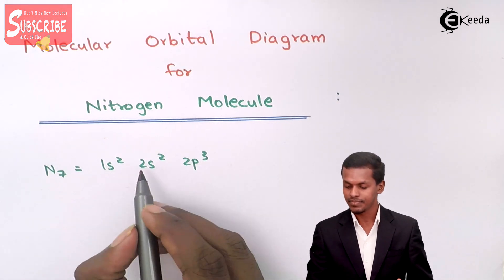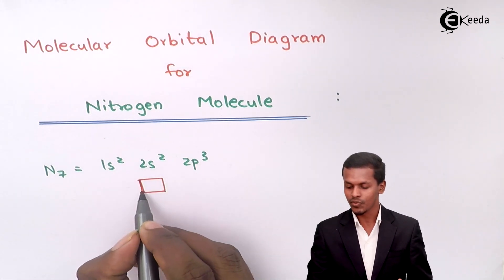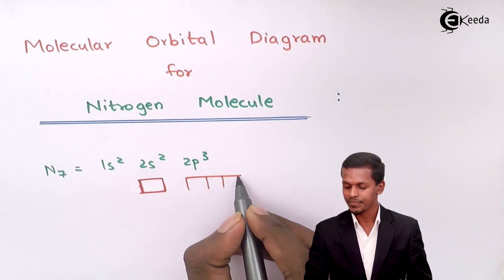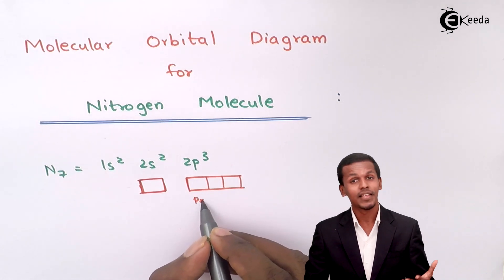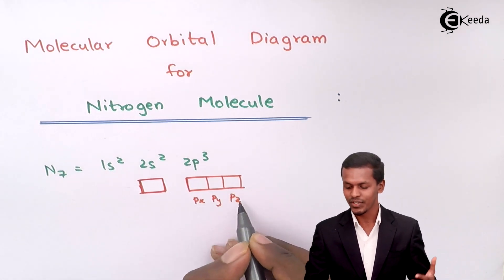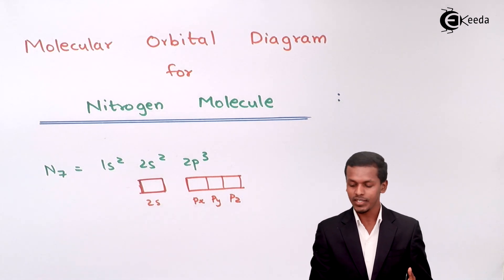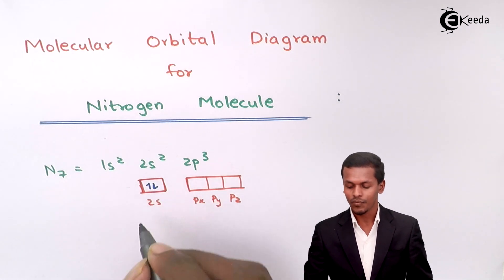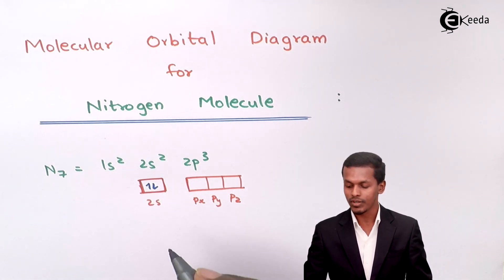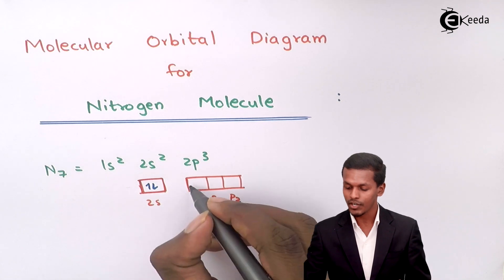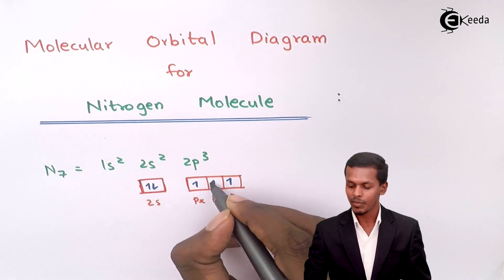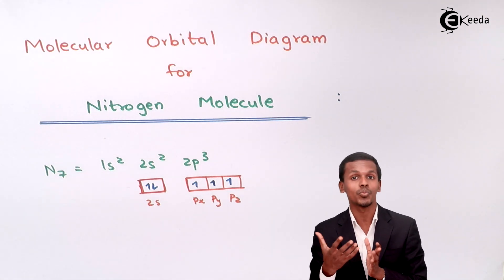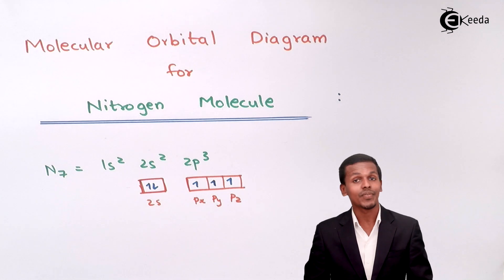Now let me represent the orbital. For the s orbital there is basically one orbital. For the p subshell there are three orbitals, namely px, py and pz. Now let us fill the electrons. The s subshell consists of two electrons, so for the s orbital there will be two electrons. For px orbital there will be one electron, for py there will be one, and for pz there will be one electron, making a total of three electrons in the 2p subshell.